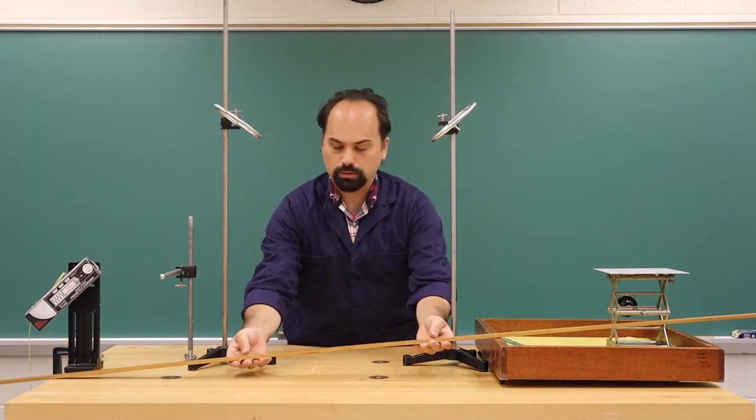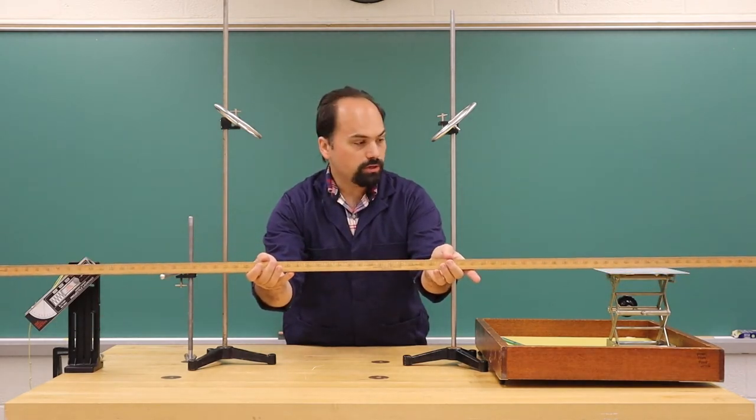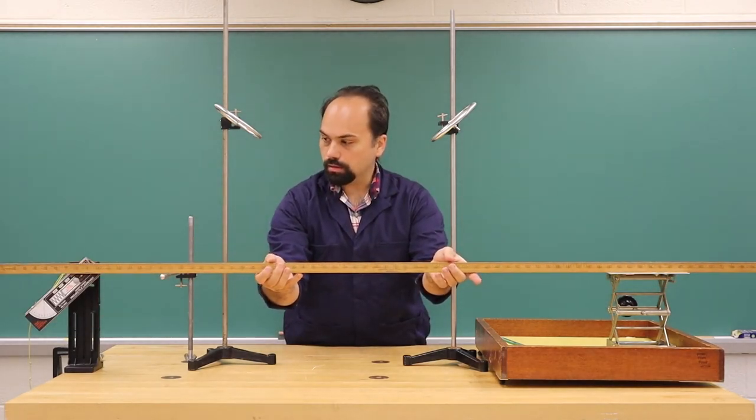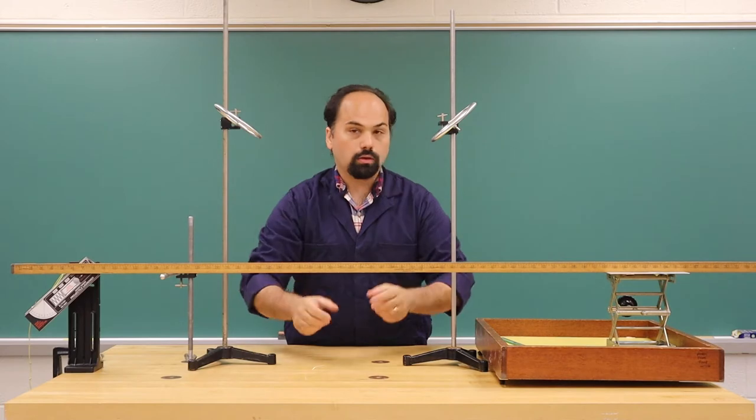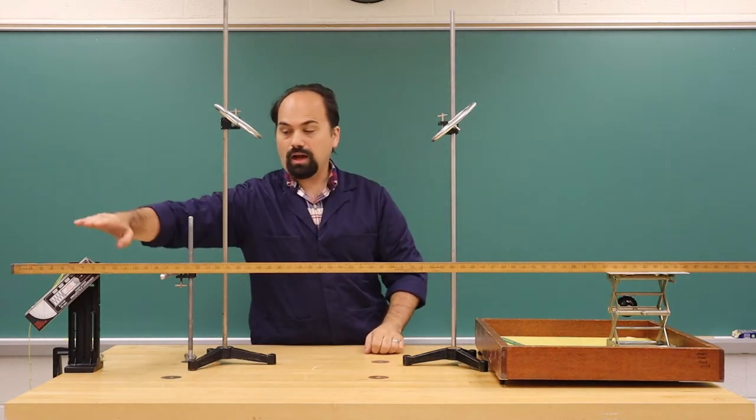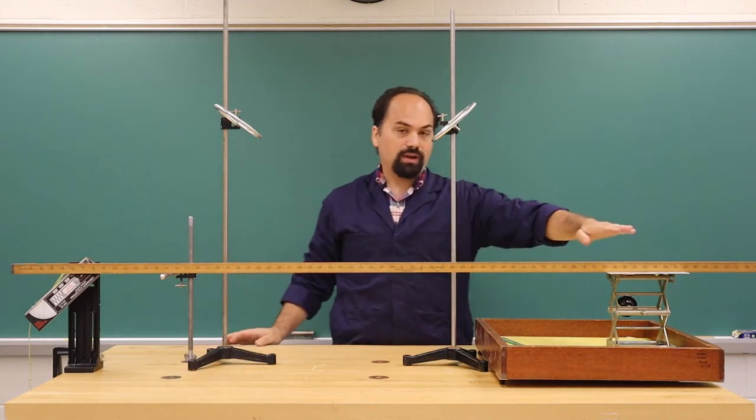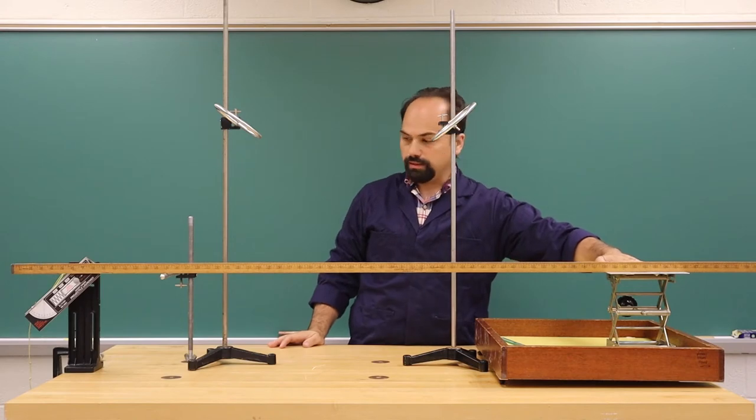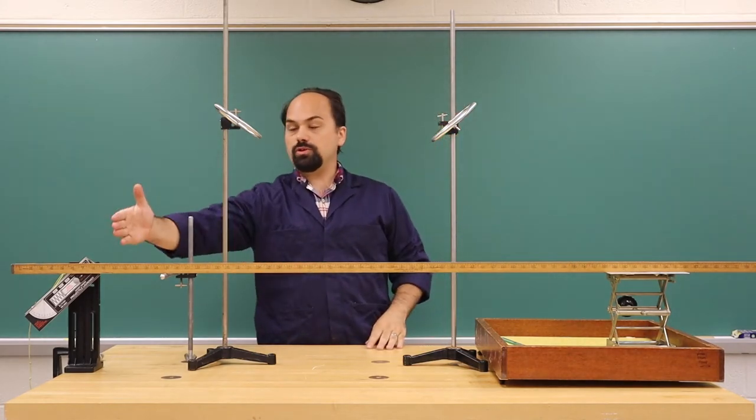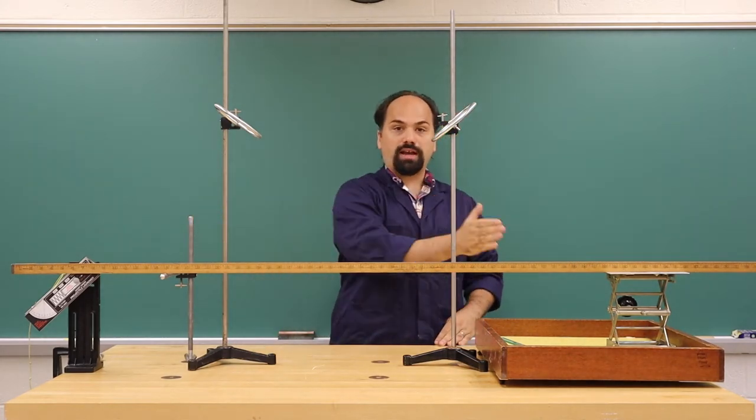To do those measurements, we will use a two-meter stick, which is level at the height of the ball and the height where the ball will land. We can use that to calculate our x positions.